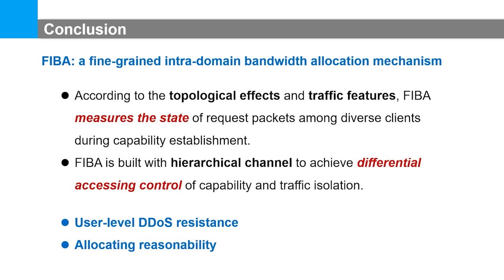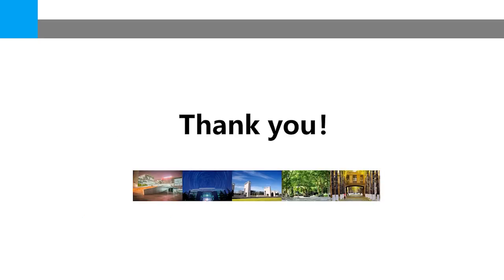We now conclude our work. We present FEBA, a fine-grained intradomain bandwidth allocation mechanism. According to topological effects and traffic features, FEBA measures the state of request packets among diverse clients during capability establishment. FEBA is built with hierarchical channels to achieve differential access control of capability and traffic isolation. FEBA realizes two key properties: user-level DDoS resistance and allocating reasonability. Thank you for listening.